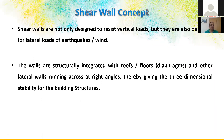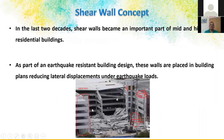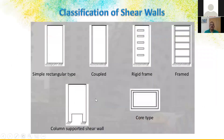Shear walls must be detailed for ductile requirements — shear reinforcement and confinement reinforcement are very important. They are designed to resist not only vertical loads but also lateral loads like earthquake and wind. They must be structurally integrated with the floor diaphragm slab. Classifications of shear walls include: simple rectangular, coupled, core type, and framed type — where coupled means two shear walls connected together with a rigid frame.